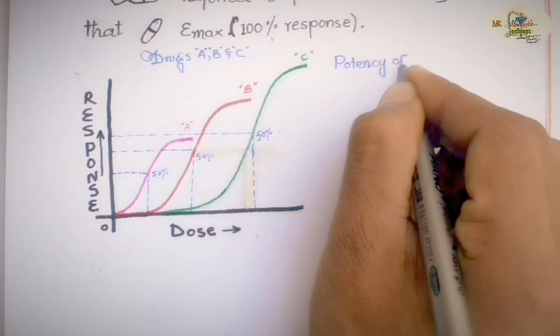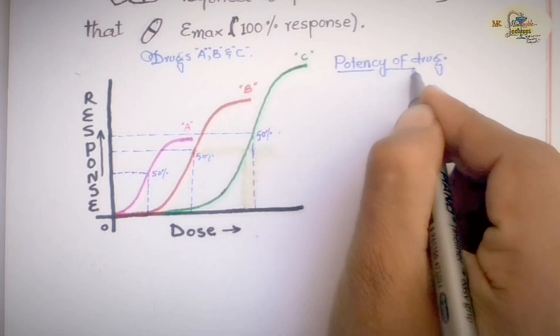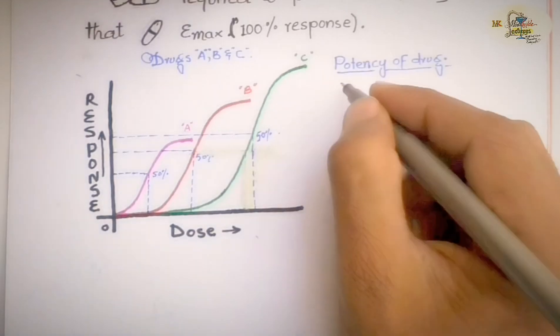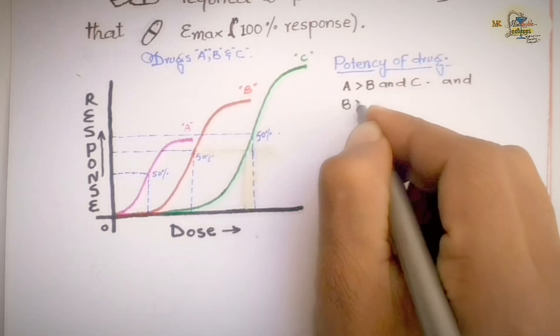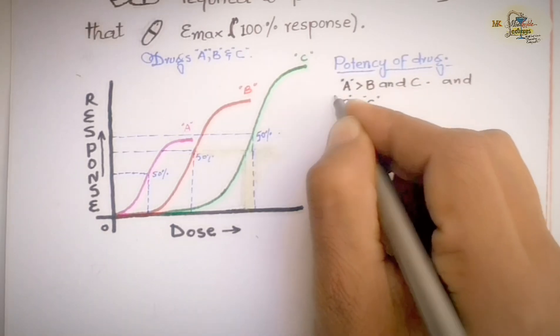Drug A requires small dose to show 50% of the maximal effect than drug B and C, thus drug A is said to be more potent than drug B and C, and B is more potent than C and less potent than drug A.